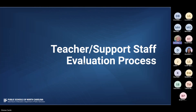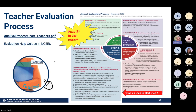Now we're going to switch gears from your evaluation as a principal to your role in the evaluation process of the teachers and staff you oversee. On screen you see the teacher evaluation process one-pager found on page 21 of the teacher evaluation manual, also on the NISIS resource site. Our focus today is mostly on step four — the summary evaluation and goal setting — but we want to make sure we've completed all of step three as we wrap up our observation cycles for teachers and staff at the end of the year.